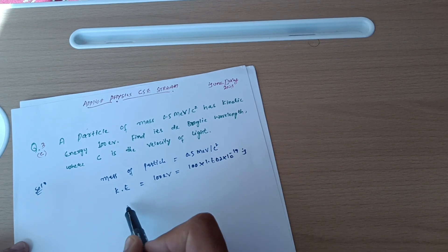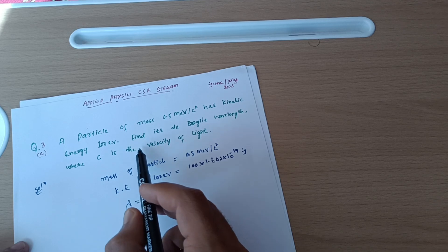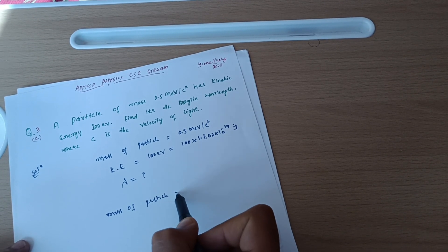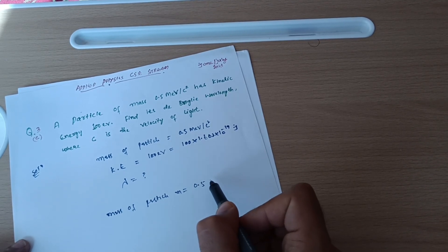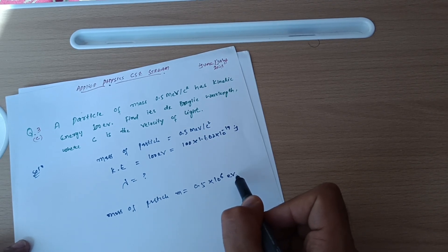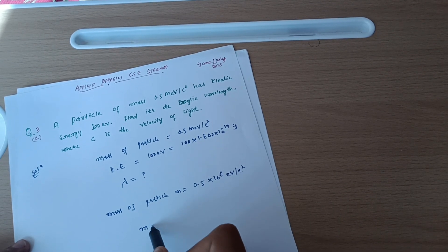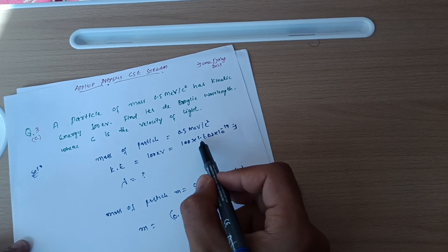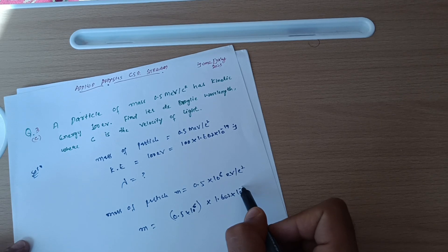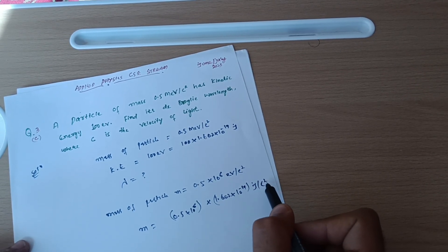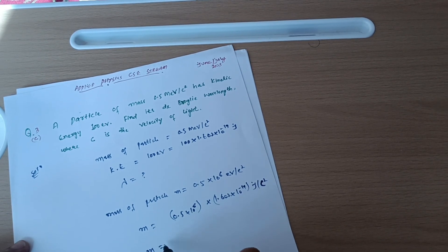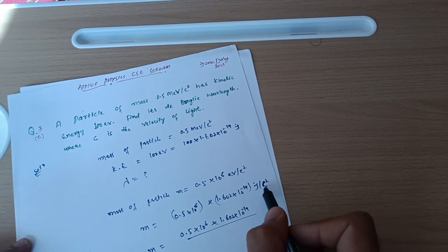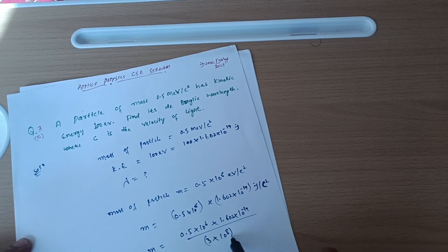We need to find the de Broglie wavelength, denoted by lambda. Now, converting the mass: m = 0.5 mega electron volt means 0.5 × 10⁶ electron volts per c squared. To convert to joules, multiply by 1.602 × 10⁻¹⁹. So m = 0.5 × 10⁶ × 1.602 × 10⁻¹⁹ divided by c squared, where c = 3 × 10⁸ m/s.